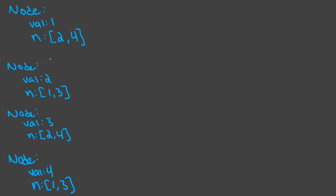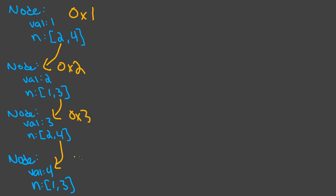Let me show you how the actual nodes are stored. I have four node objects. For example, let's say this node has value 1 and is at address 0x1. The value is 1, but the neighbors are going to be nodes — not values. So this is actually pointing to the node with value 2, stored at 0x2. We're also connected to 3 at 0x3, and 4 at 0x4.